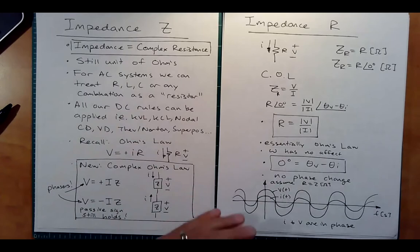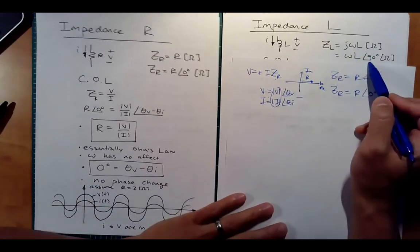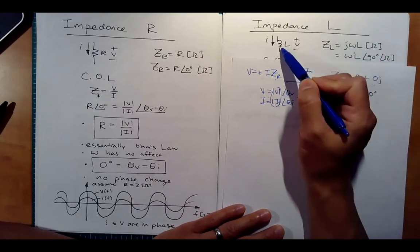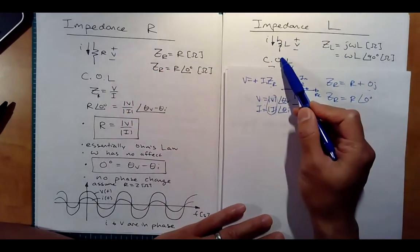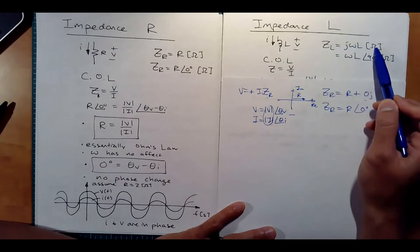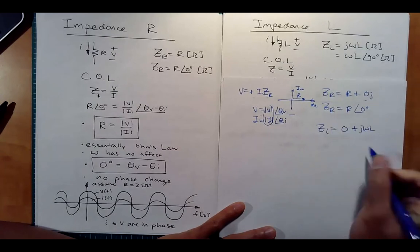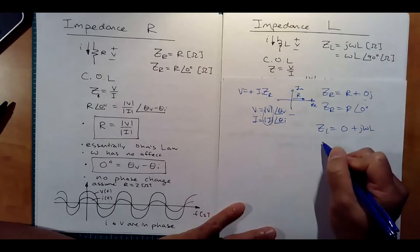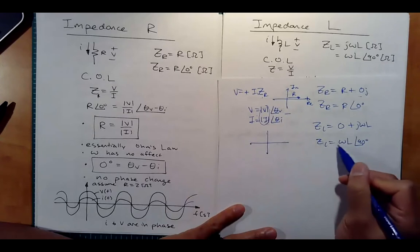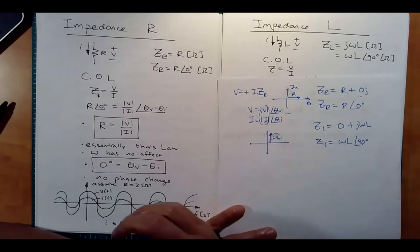Now let's go to something more complicated — the inductor. This equation you have to remember; it comes from the physics of the inductor. We have the same situation with V and I and complex Ohm's law. For ZL, it's jωL ohms. In rectangular form, ZL equals 0 plus jωL — it has no real component. In polar form, ZL equals ωL at an angle of 90 degrees, pointing straight up on the complex plane with length ωL.